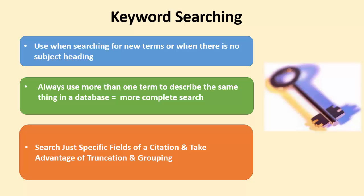Also, if you want to do as good and focused a search as possible, take advantage of things like searching specific citation fields, and use truncation and grouping to ensure that the results you get are articles that address your topic and are as focused as possible.